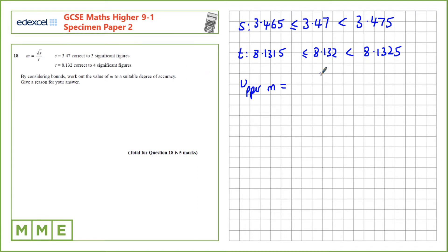So, we want the upper bound of s. That's 3.475. We're taking the square root of that. And then we're going to divide by the lowest value of t, which is 8.1315. That gives us a value of 0.229248.